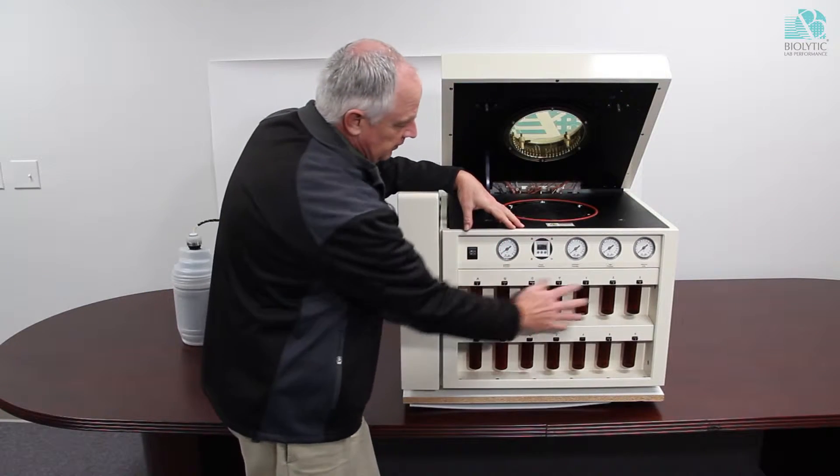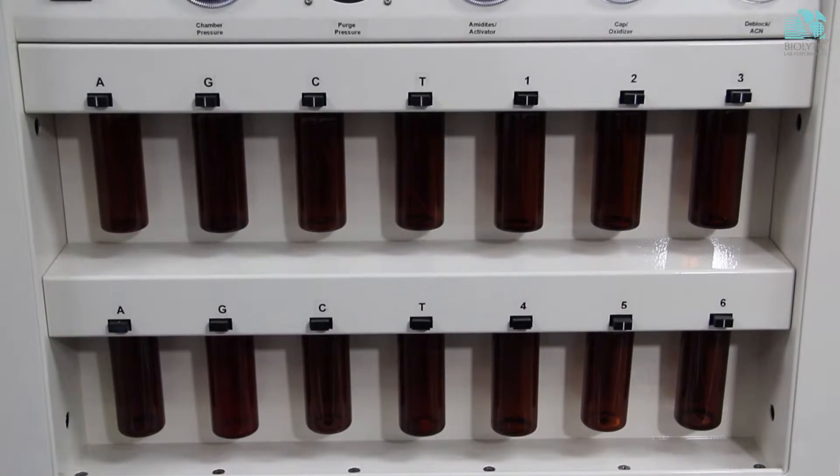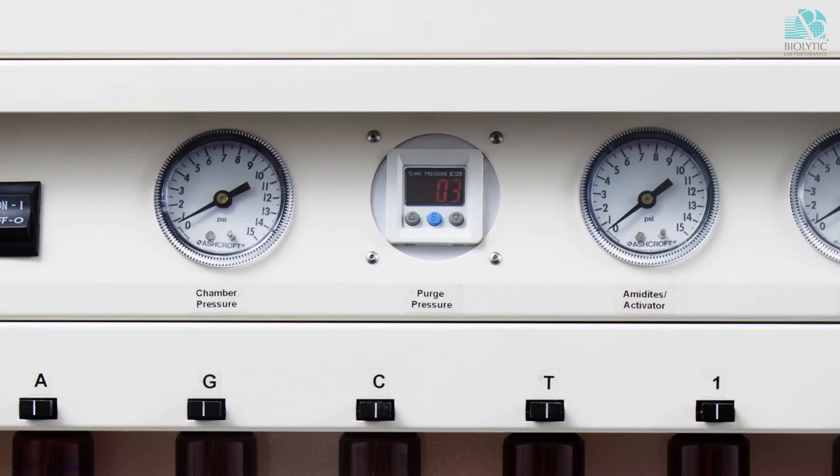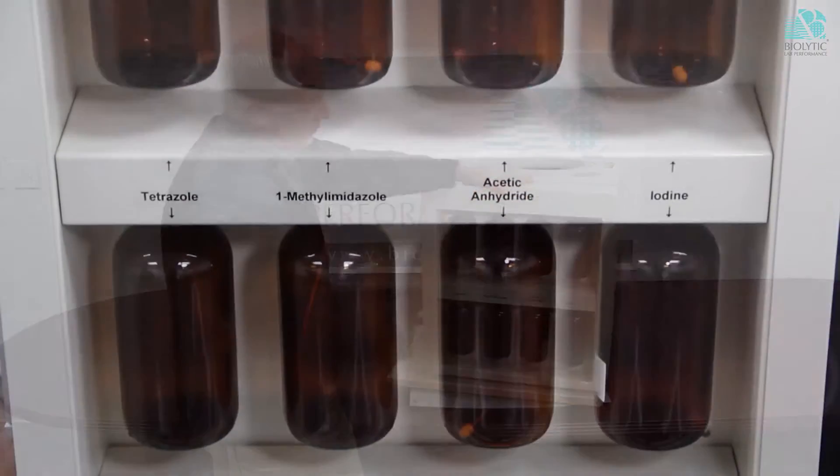On the front you can still see all of the aminite bottles are as they were. We've changed this analog gauge over to a digital gauge. These bottles remain the same as before.